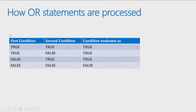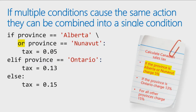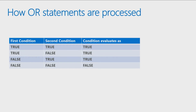The way OR statements work is: if the first condition is true or the second condition is true, the overall condition evaluates as true. With OR statements, if any one of the conditions is true, the entire statement will be evaluated as true. So if the province is Alberta, tax is set to 5%; if the province is Nunavut, tax is set to 5% — it doesn't matter which one is true. For the tax to be anything else, it can be neither Alberta nor Nunavut. This is what we call a truth table showing how OR statements are evaluated.